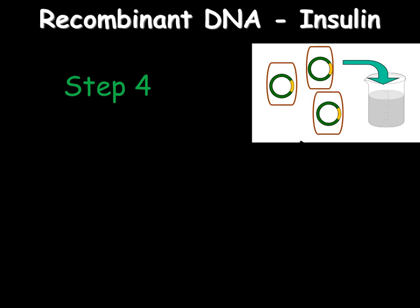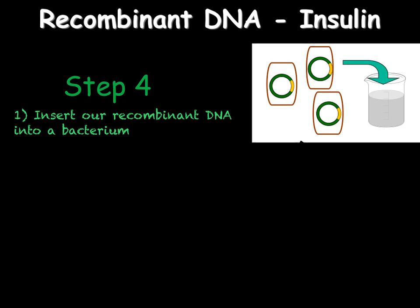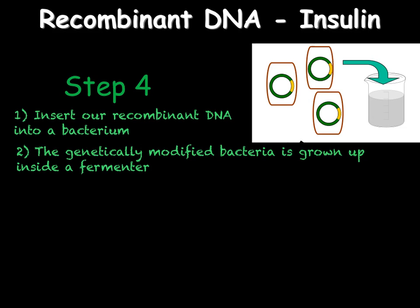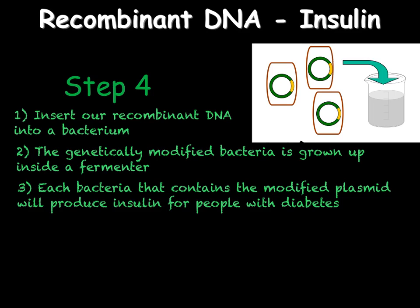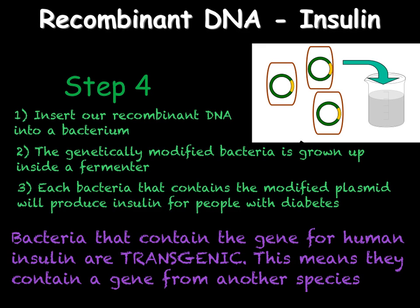Finally, we insert our recombinant DNA back into a bacterium. This modified bacterium, now a genetically modified organism, is grown up inside a fermenter, producing millions of bacteria that manufacture insulin for people with diabetes. Each bacterium containing the desired plasmid produces insulin; as insulin is not needed by the bacteria they secrete it and we can collect it. Bacteria that contain the gene for human insulin are known as transgenic, meaning they contain a gene transferred from another species. This process can also be done with plants, as we will look at in B3.12.